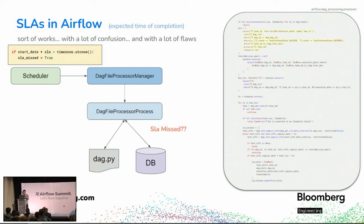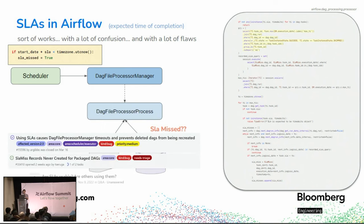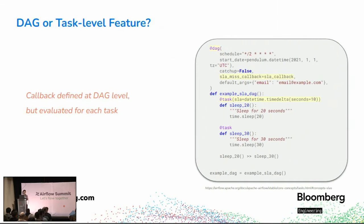I wasn't alone in this confusion — over the last five years there were a large number of users reporting issues about the SLA feature, writing blog posts about them, and leading efforts to fix it. But given that the feature started off with a troubling foundation, attempts to patch it often led to more patches and more issues. Some people in the community questioned if it was usable at all. Even after going through the effort to understand exactly how it worked, we weren't really confident about the future of SLAs as a reliability feature.